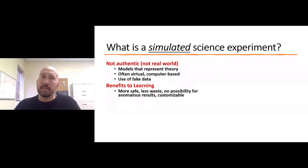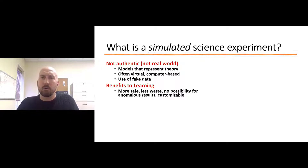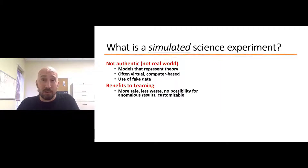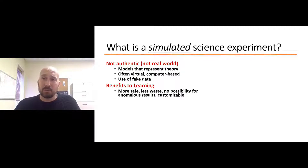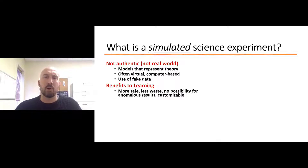With respect to constructing a simulated experiment for a classroom setting, there are also potential benefits. They can be structured to provide increased safety compared with some authentic experimental scenarios. Simulated science experiments could be structured to generate less waste, can often be far more affordable, and allow students to repeat experimental trials infinitely in some cases without incurring additional costs. They can be structured to prevent the possibility of anomalous results — only preset results will be generated — which can simplify the conclusions students are likely to draw. Simulated experiments can often be customizable.